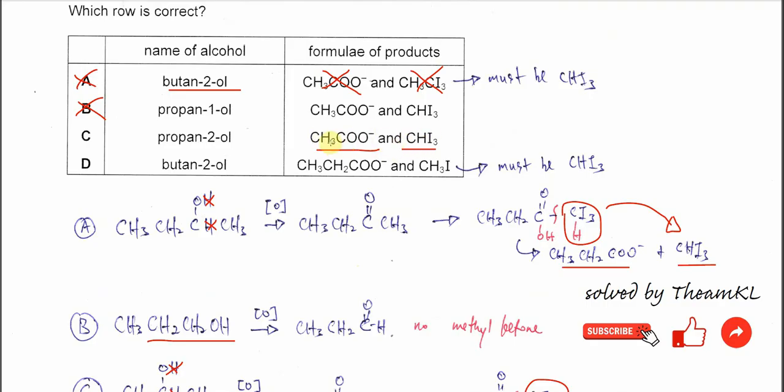Therefore the answer is C because the products are correct: iodoform and sodium ethanoate.